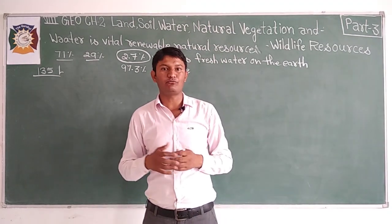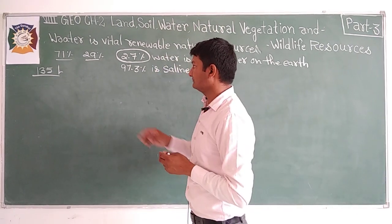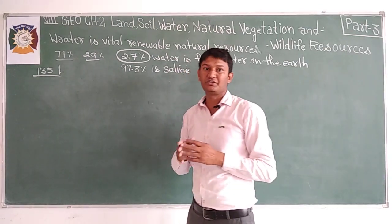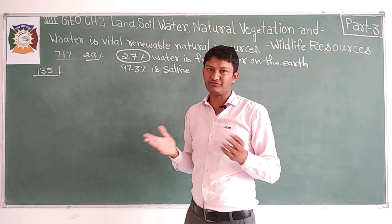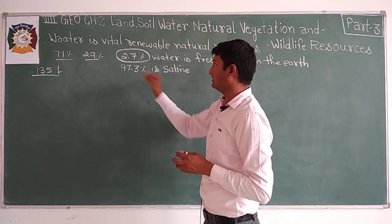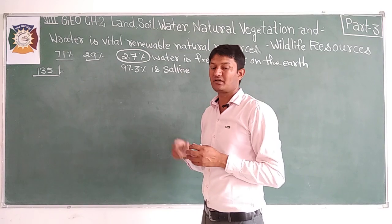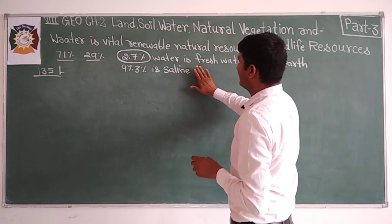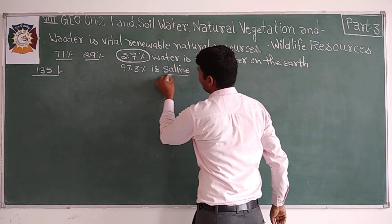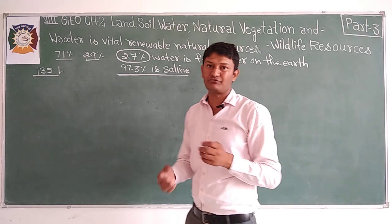Now you can understand the value of fresh water on Earth. This 135 liters used by the average person in urban areas may or may not be sufficient. Fresh water available on Earth is very less — only 2.7%. Even this fresh water is used for agriculture and industries, which pollute it.